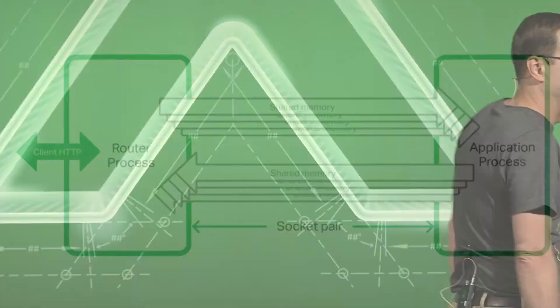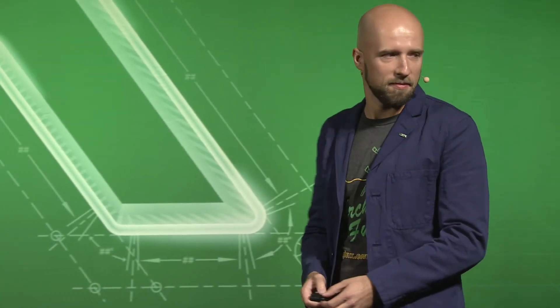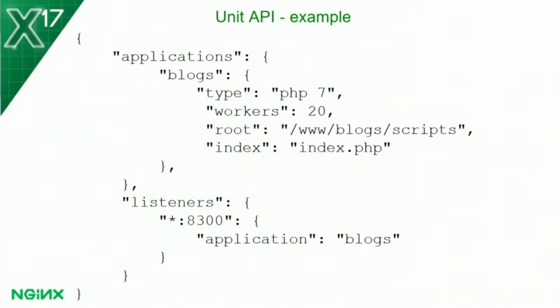And now, Nick will tell you more about Unit API configurations and our future roadmap. Thank you, Igor. All right — the API of NGINX Unit is easy, and it's right here. You can see a very simple example of the Unit API. I want to talk a little bit about how it's configured and how to make changes to the environment using this API.